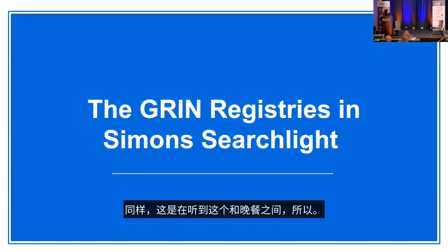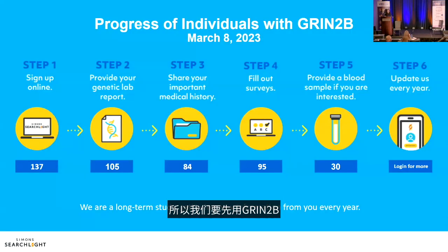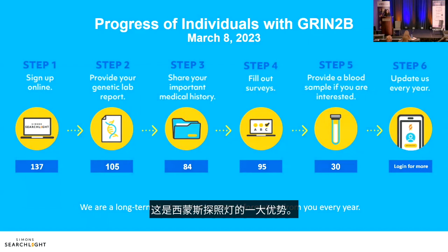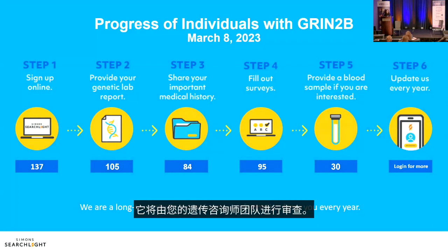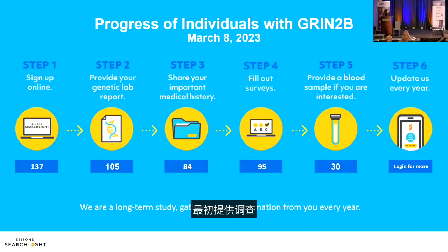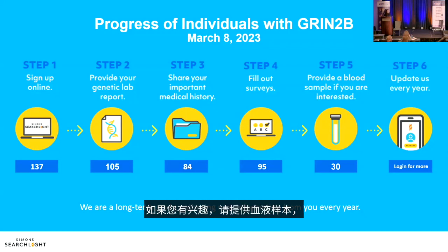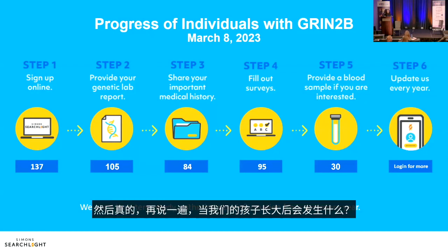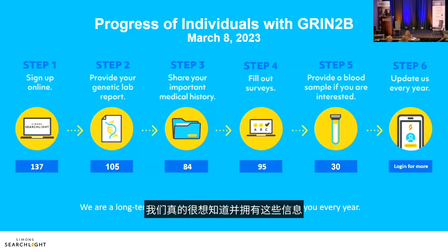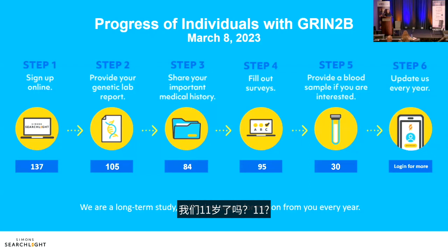Focusing on GRIN2B data as of March 2023: the enrollment process starts with signing up online, submitting a genetic lab report reviewed by a genetic counselor, then sharing medical information via surveys — initially and longitudinally. Blood sample collection is optional. Simons Searchlight is now 11 years old, generating substantial longitudinal data.